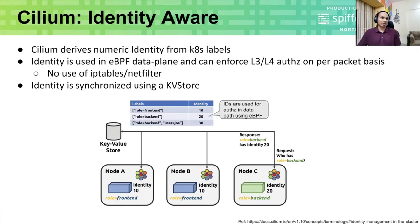In the case of IP tables-based rules, if you have a single node increase or multiple pods added to the mix, the number of IP table rules can exponentially increase. This particular problem is not faced when using numeric identity-based rules.